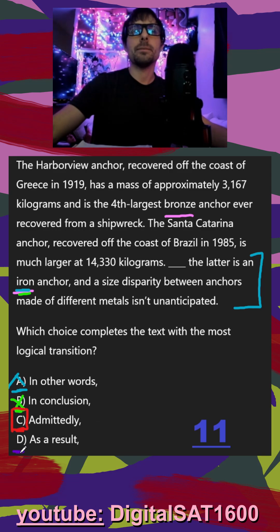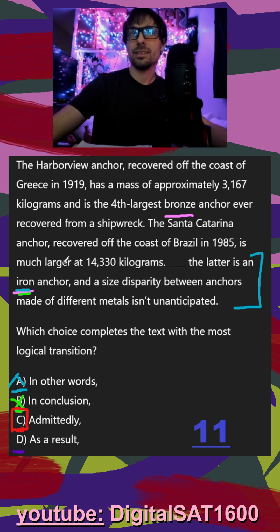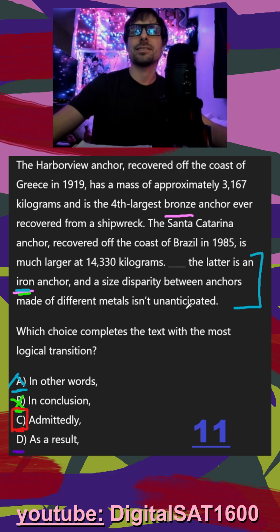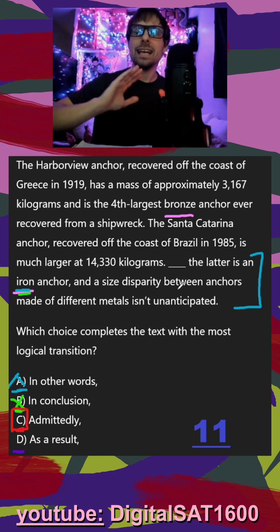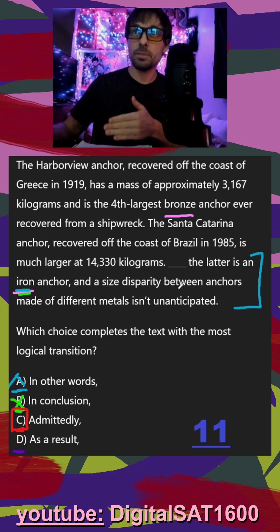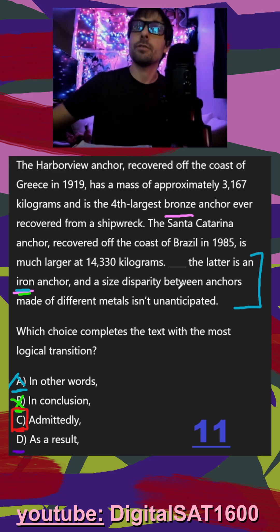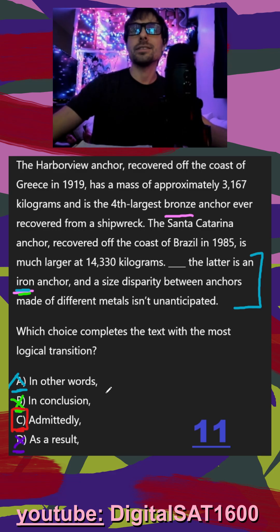And finally in D, 'as a result' — well, as a result of this being a larger anchor, it is an iron anchor because of that, which doesn't make much sense. It already was an iron anchor and they just tend to have different masses. 'As a result' would be more like: as a result of this being a much higher mass anchor, it is only used on particular ships, whereas the anchor with less mass is used on a different type of ship. So in this context, D is not going to work and C is going to be our final answer.